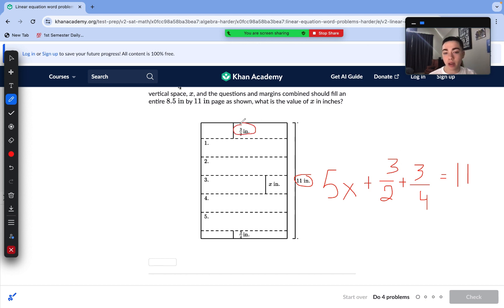We can use our keywords like total and initial values in order to identify which is our y-value, and our y equals mx plus b, and which is our y-intercept value, or our b-value. Being our b-values, these two combined, and our y-value is 11. So, let's go ahead and solve three halves plus three-fourths. Let's get them to a common denominator.